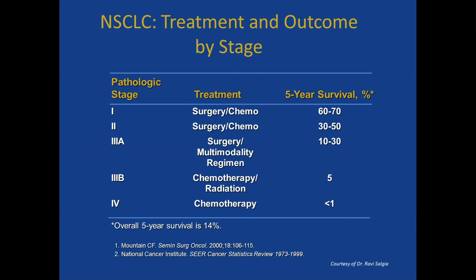We do a lot of work in anatomic staging. In breast cancer especially, our staging is incorporating anatomic staging as well as more biologic features, so we can have a more prognostic stage. One key reason we've spent a lot of time on anatomic stage in solid tumors — not leukemias or lymphomas — is that how we decide on appropriate treatment plans is really based on anatomic stage and whether the patient is potentially curable.